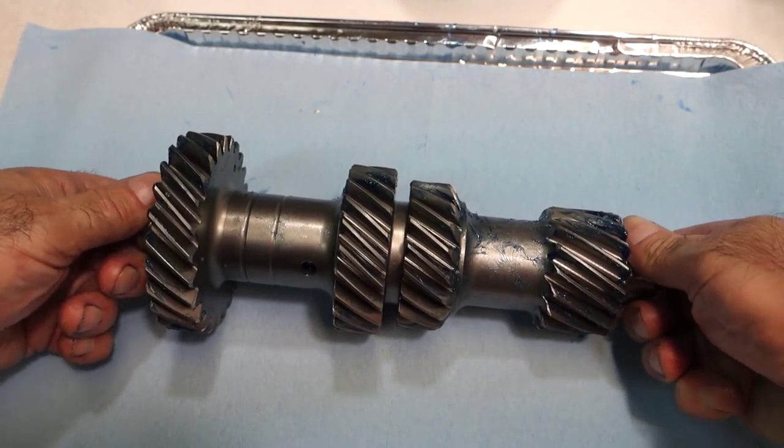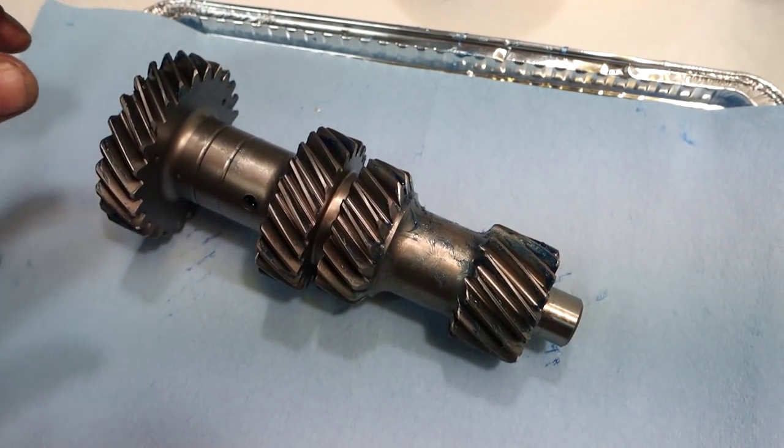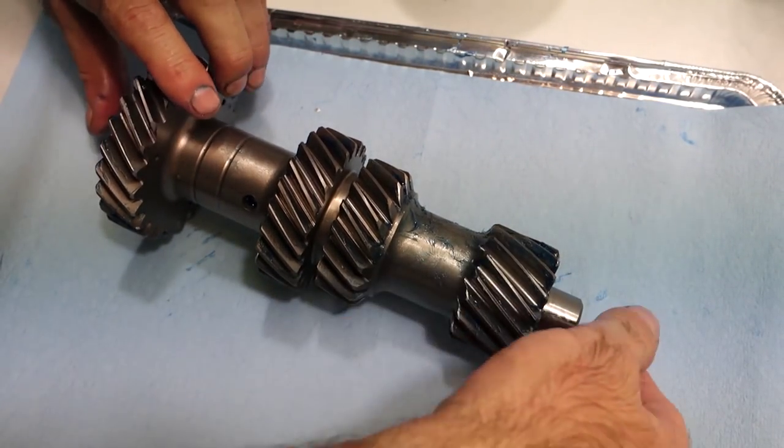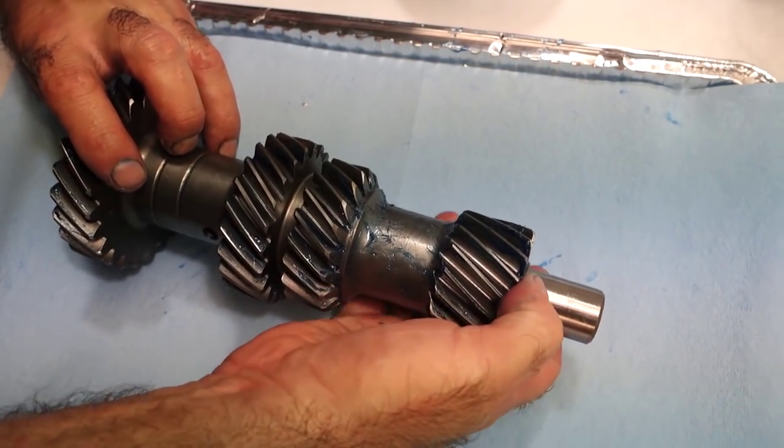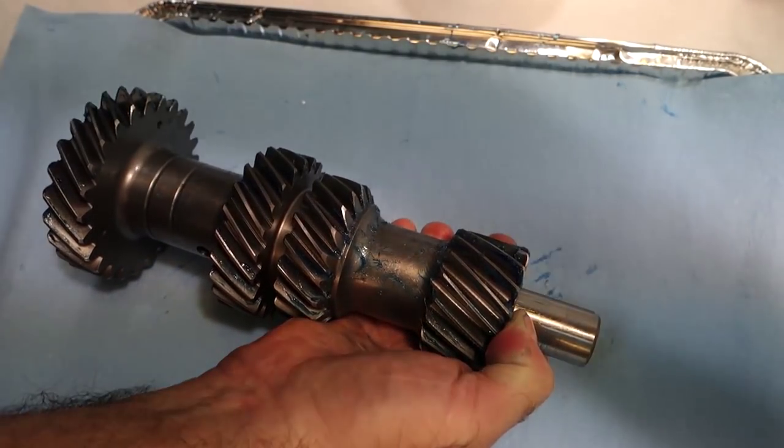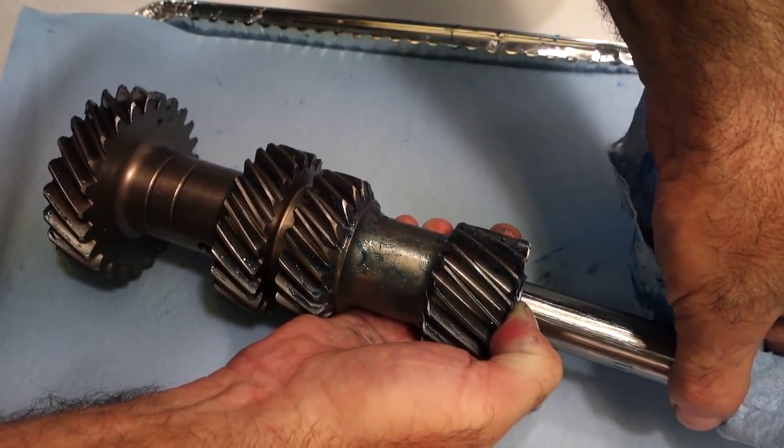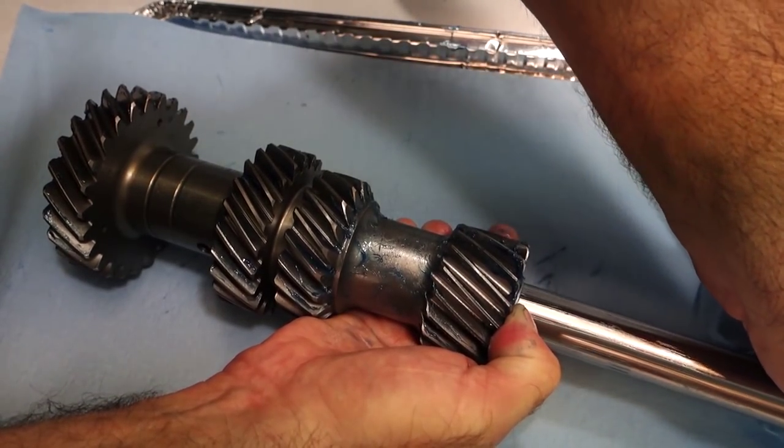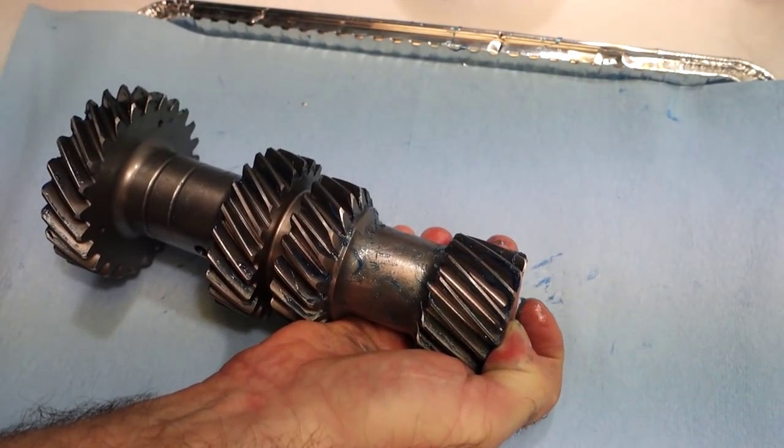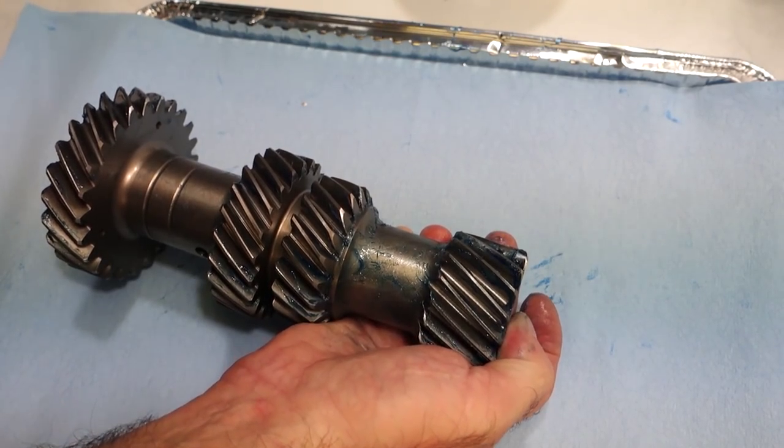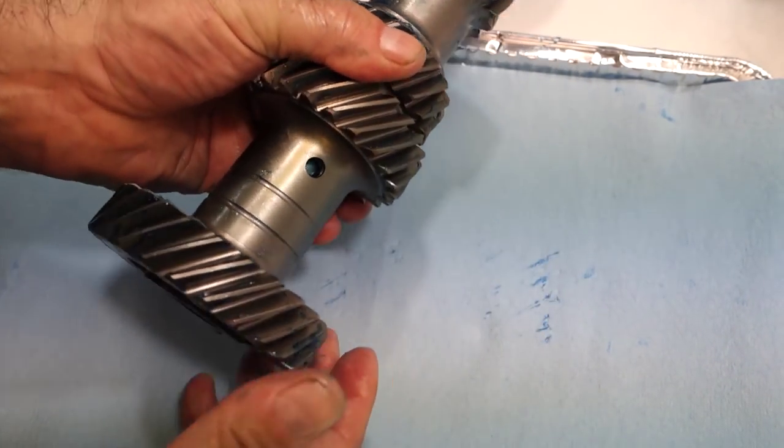This also helps pack the needles into the gear. Now what you do is push the shaft out and kind of hold the spacer on this end, pull it out. The needles will be nicely packed. Now what happens, you can have a visual.